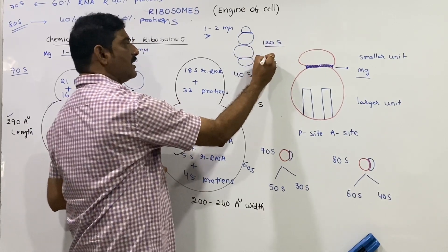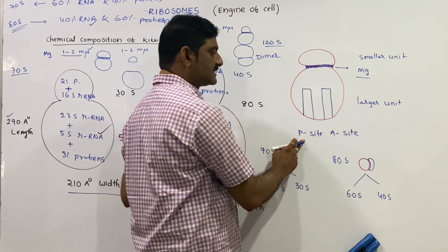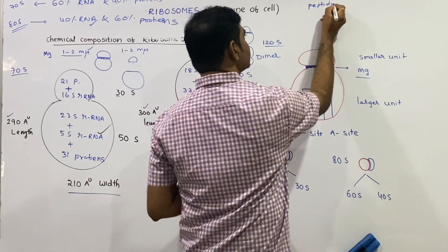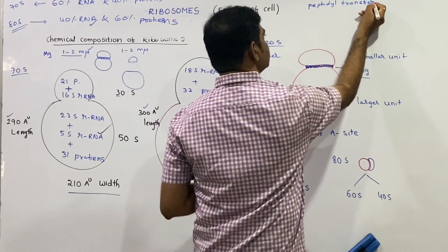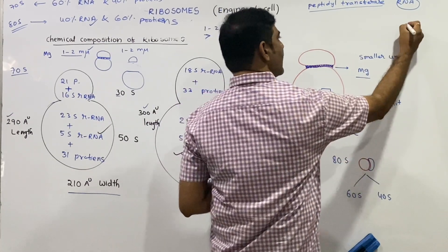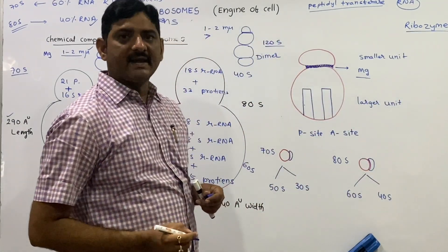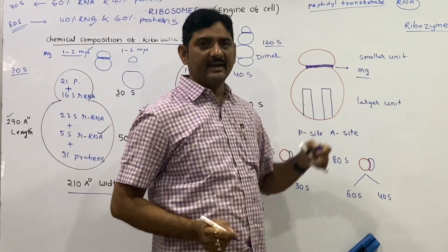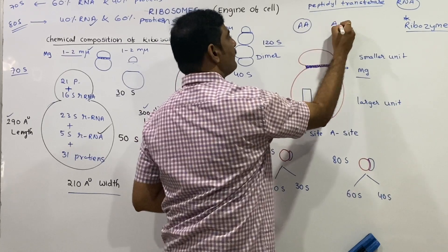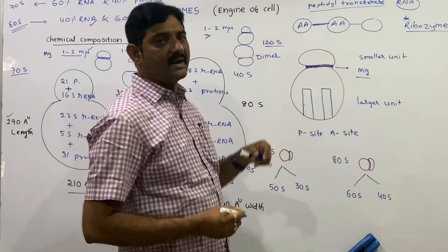Ribosomes have two important sites on the larger subunit: the P-site (peptidyl site) and the A-site (aminoacyl site). The enzyme peptidyl transferase, which forms peptide bonds between amino acids to build the polypeptide chain, is made up of RNA — making it an RNA-based enzyme, or ribozyme. This is unusual because most enzymes are made up of proteins.